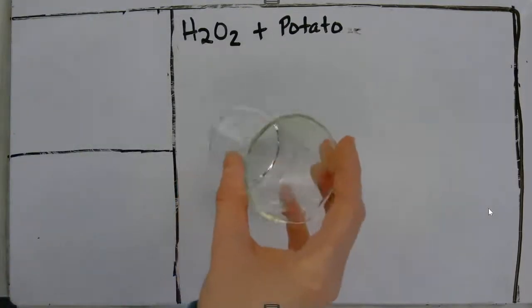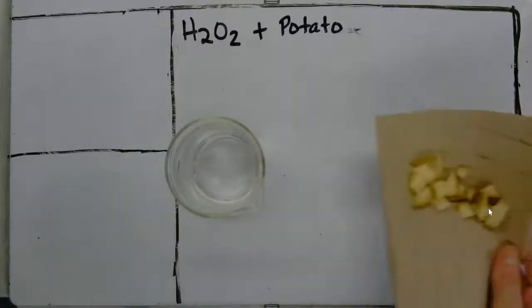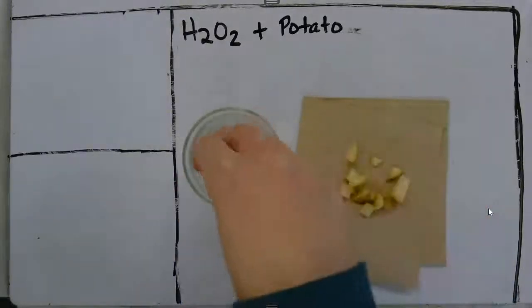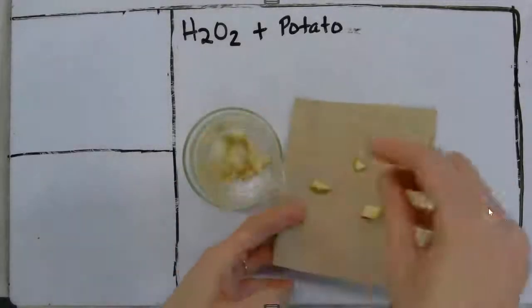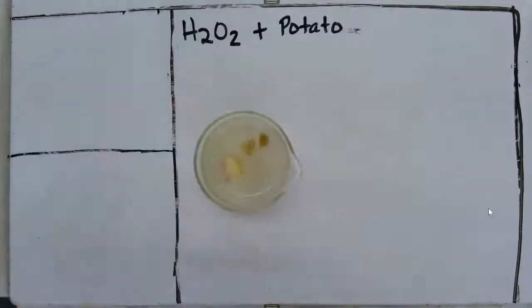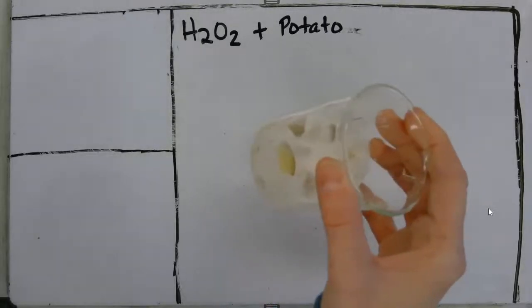We're going to take hydrogen peroxide, which I have in this beaker, and add pieces of potato to the hydrogen peroxide. You can see that it's starting to bubble with the formation of a gas.